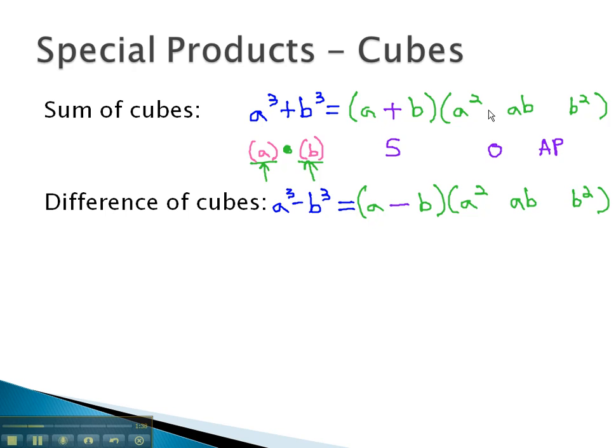O stands for opposite sign. Minus is the opposite of plus, and plus is the opposite of minus. Finally, the last term is always plus, or always positive. Using these two formulas will allow us to factor either a sum or difference of cubes.